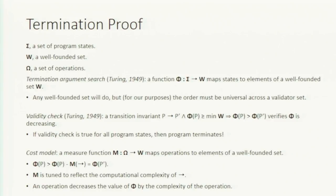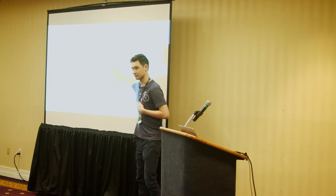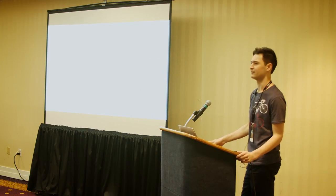The first function — the termination argument search — we can think of as a balance. Whatever we decide W to be, whether the set of natural numbers, tuples of natural numbers, or any well-founded set, the argument search says: given a program state, I have this much of W left. To stick with familiar lingo, if this is my program state on the EVM, this function says given a program state, this is my remaining gas balance.